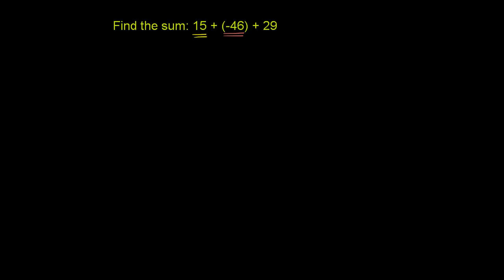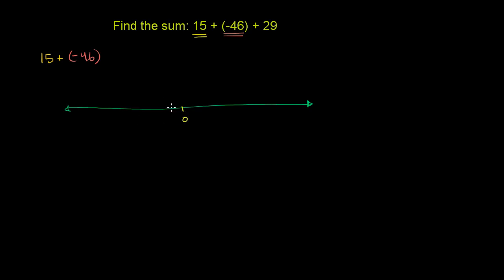So let's just do 15 plus negative 46. Let me draw a number line here just so we can properly visualize what is going on. We're starting at 15, so let's draw a 0 over here. 15 could be right over here. Let me draw a big fat arrow to signify this is 15. 15 has an absolute value of 15, so the length of this arrow would be 15.